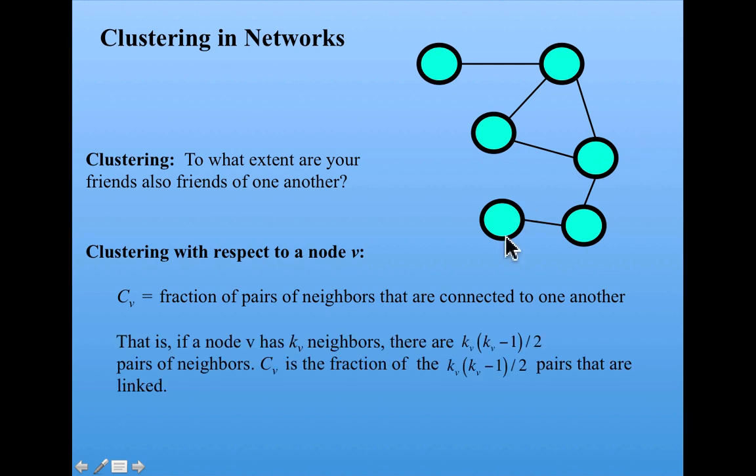Well, mathematically, we know that if a node V has K_v neighbors, there are K_v times (K_v minus 1) over 2 pairs of neighbors.